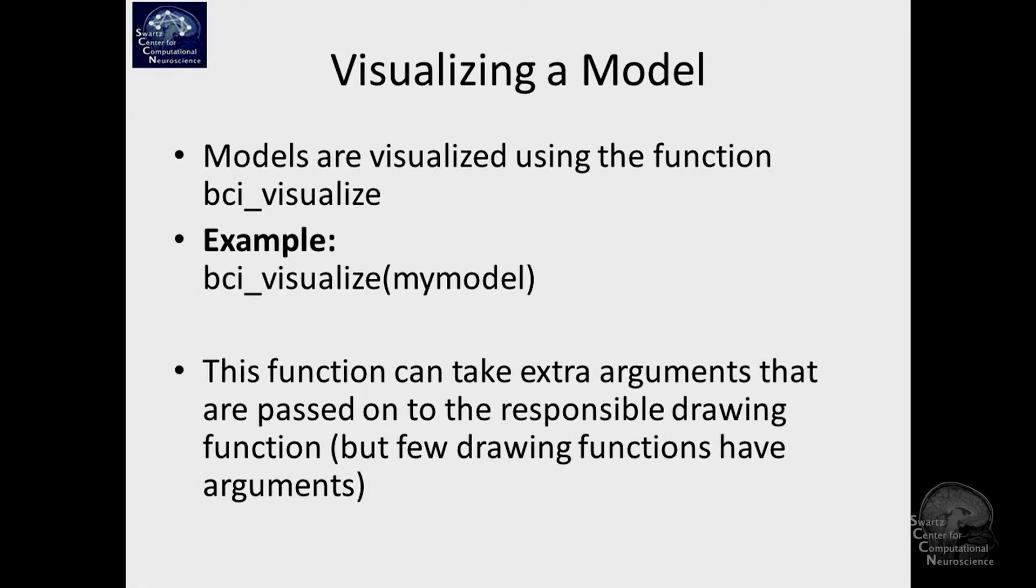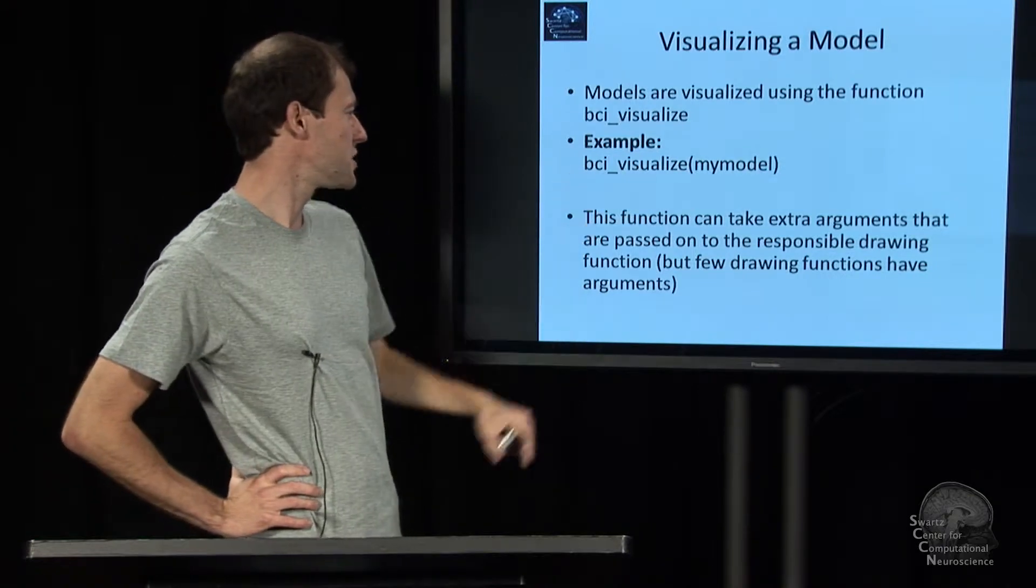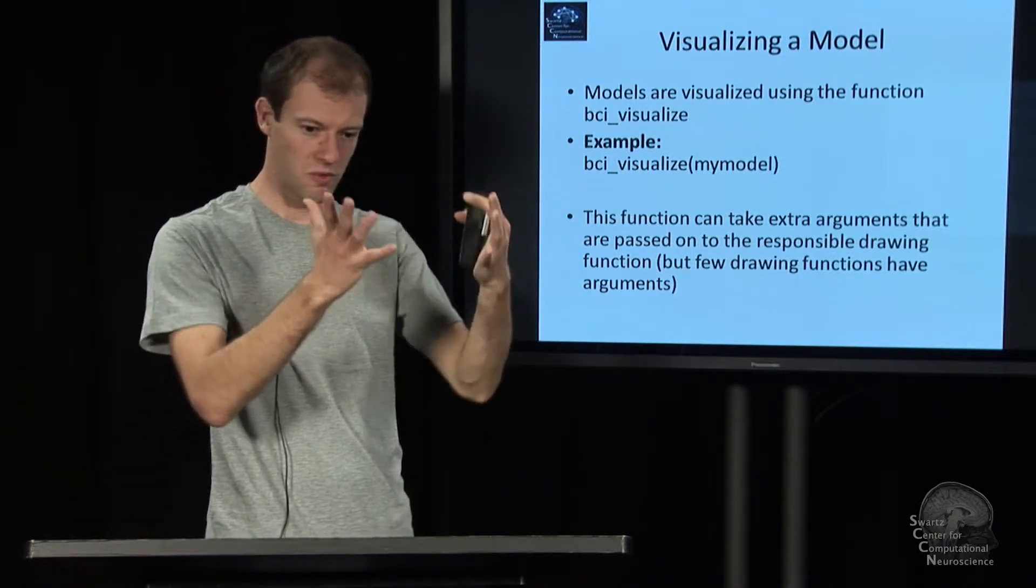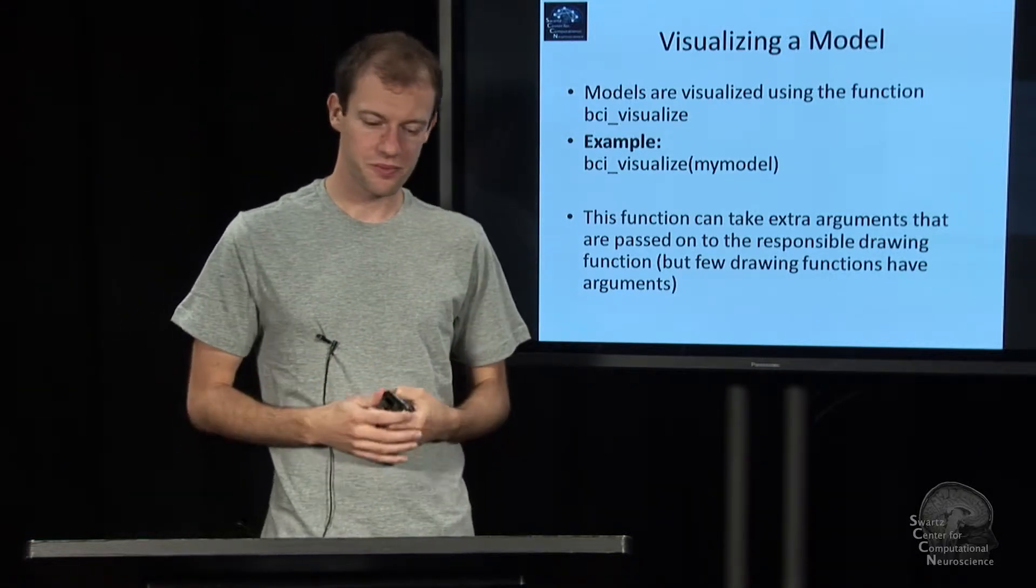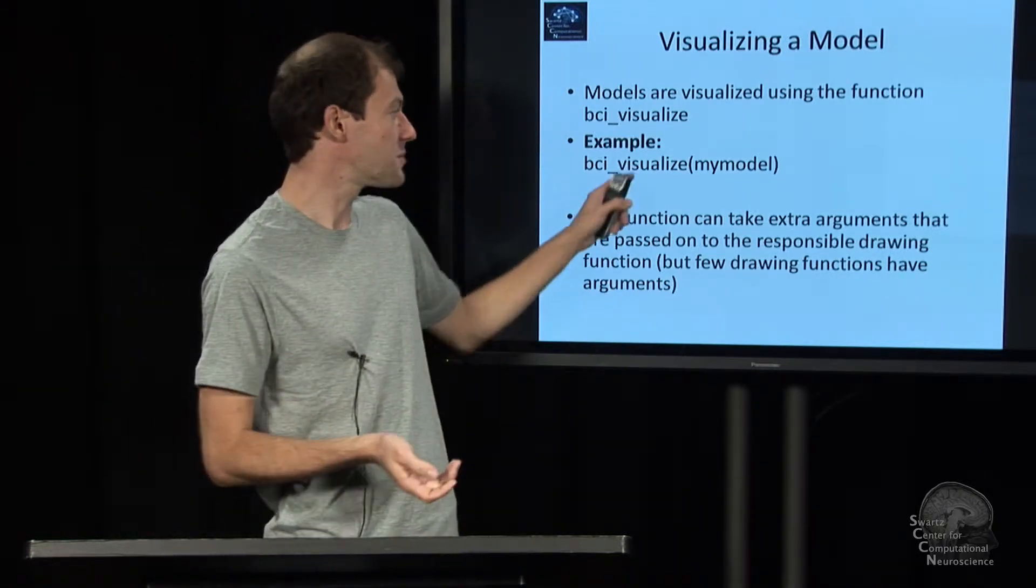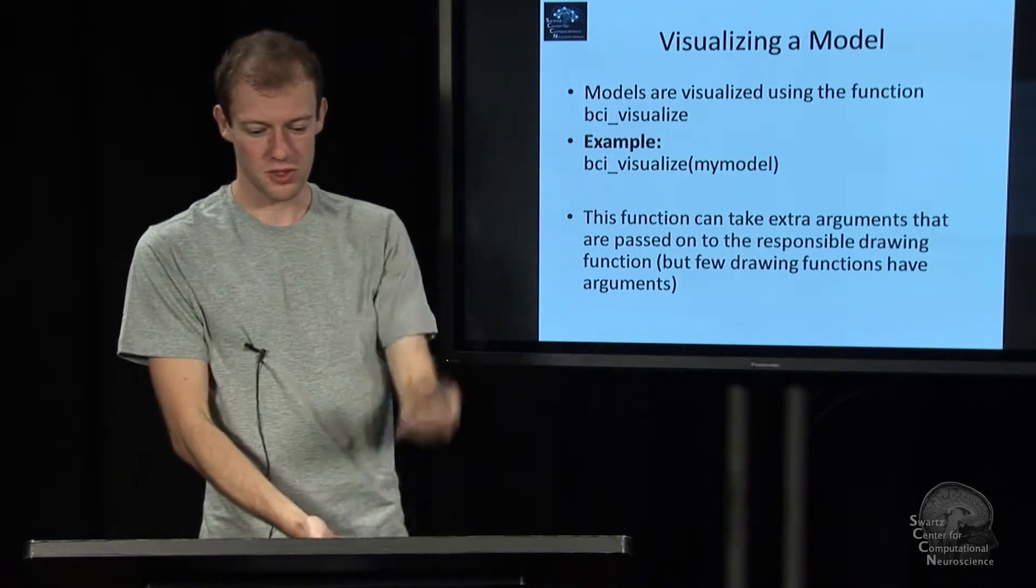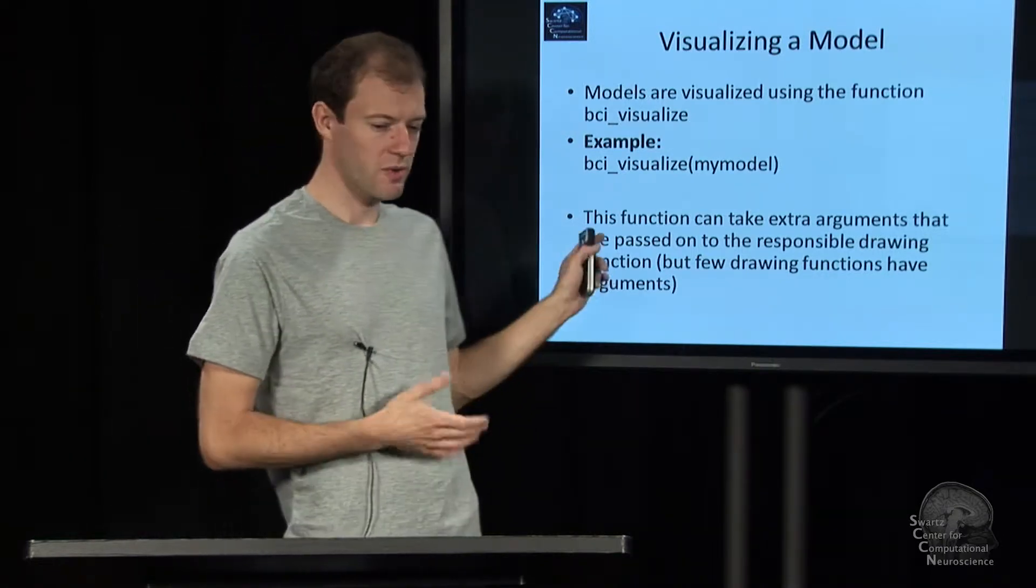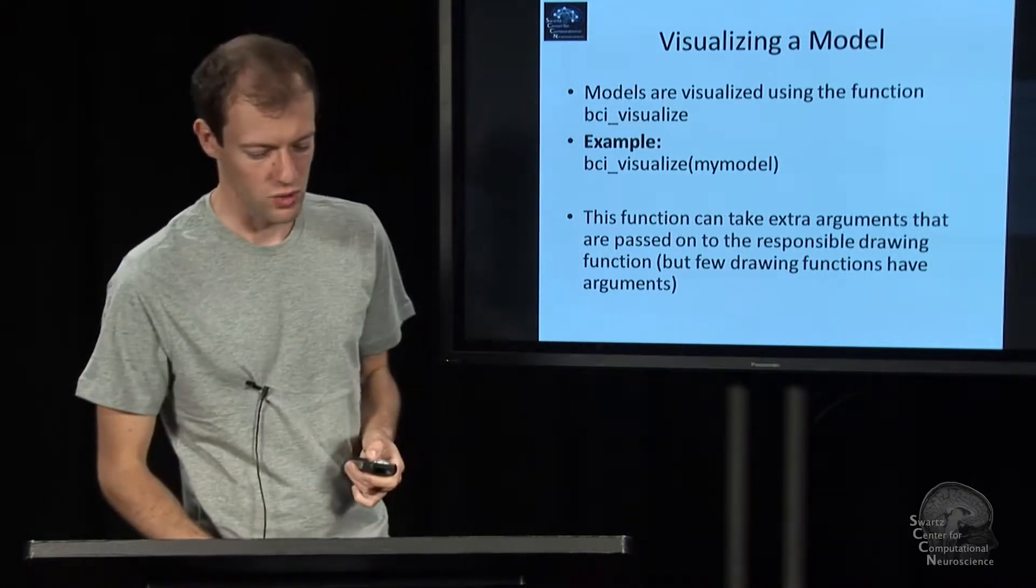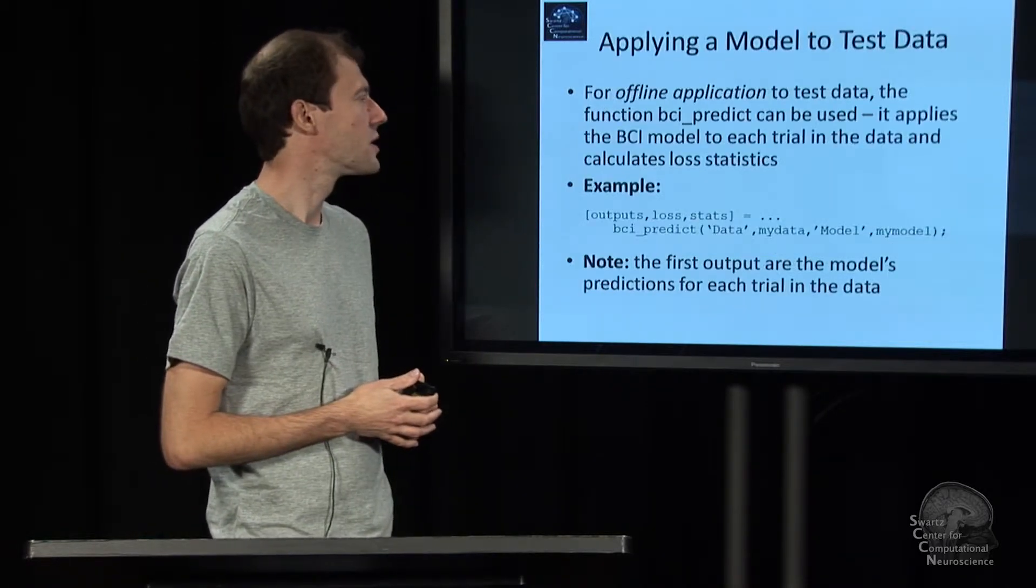The visualization function is so easy, I'll just cover this with one example. If you have a model that you just calculated, say using bci_train, stick it into bci_visualize and it'll just print the model graph and so on. Most visualizers are currently rather simple, but for sure that part is up to the paradigm ultimately. If you have a CSP model, the CSP paradigm is the thing that is responsible for drawing it. And some paradigms may not even have a visualizer, and others may have really complicated visualizers, like SIFT for example.